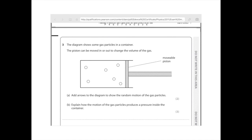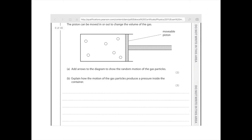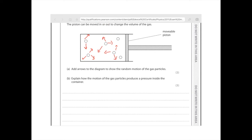The diagram shows some gas particles in a container. The piston can be moved in or out to change the volume of the gas. Add arrows to the diagram to show the random motion of the gas particles — just show them moving around really randomly; make sure you add enough arrows. To explain how the motion of gas particles produces the pressure inside the container — this is an answer you can rote learn — first talk about the fact that gas particles have random motion and that they collide with the walls of the container. Then this creates a force. Lastly, state the equation pressure equals force over area. That gets you three marks; I'd really recommend learning that answer off by heart.